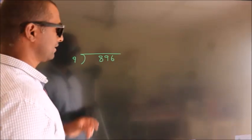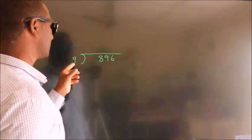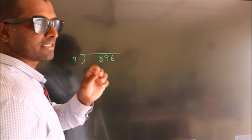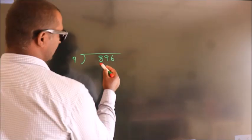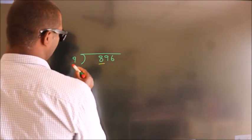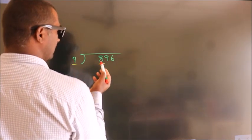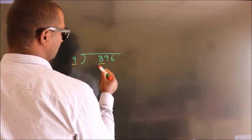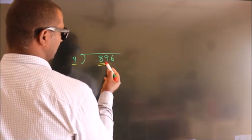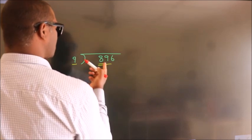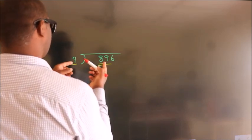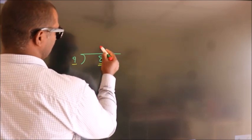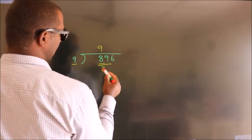How to divide 896 by 9? See, here we have 8, here 9. 8 is smaller than 9, so we should take two numbers: 89. A number close to 89 in the 9 table is 9 nines, which is 81.